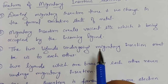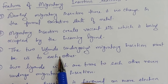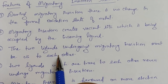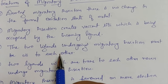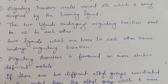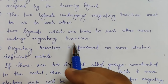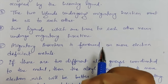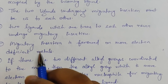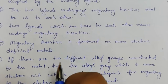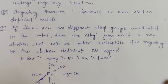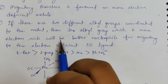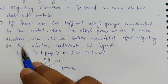Two ligands undergoing migratory insertion must be cis to each other — this is very important. Also recall that reductive elimination also takes place when two ligands are cis to each other. The next point says that two ligands which are trans to each other never undergo migratory insertion. Point five says that migratory insertion is favored on more electron-deficient metal — if your metal is more electron deficient, migratory insertion will be more favored.